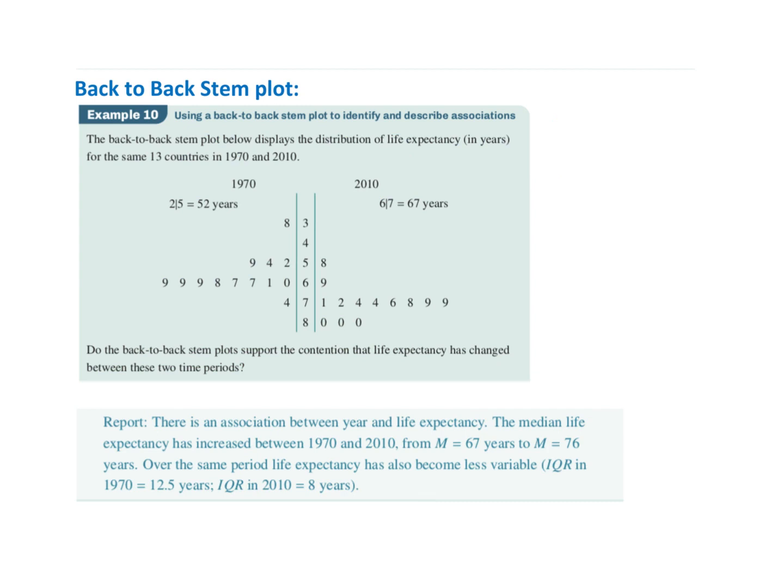Here we've got a back-to-back stem and leaf plot showing the life expectancy in years of the same 13 countries. This is 1970 and then 2010. They've said there's 13 countries, so we know that N is 13. If I quickly wanted to find the median, I know the median's found at N plus 1 divided by 2.